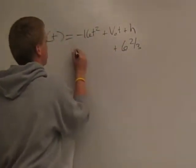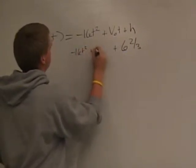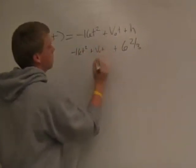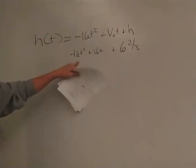Negative 16 is your gravity constant. That is the effect of gravity on the ball in the air.